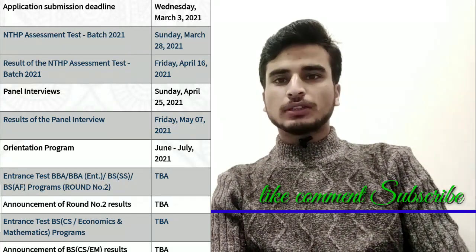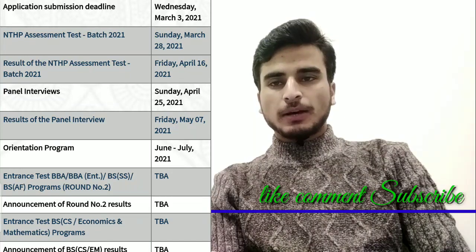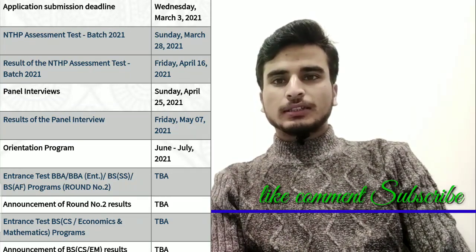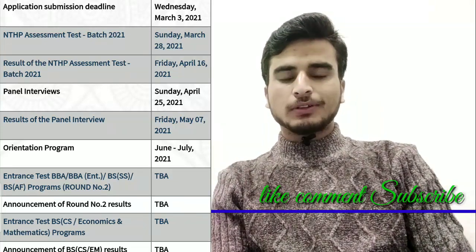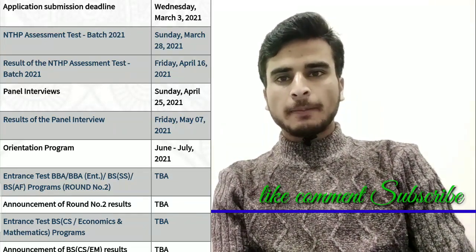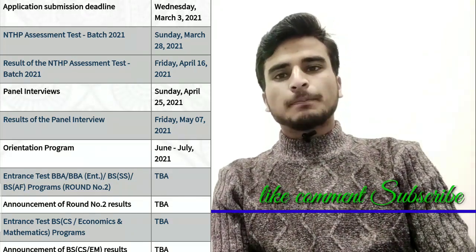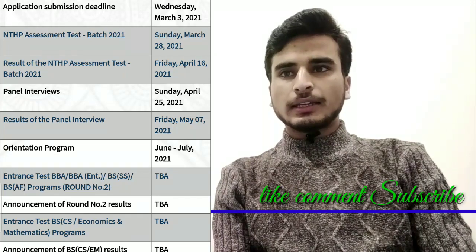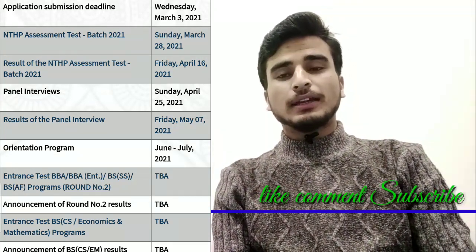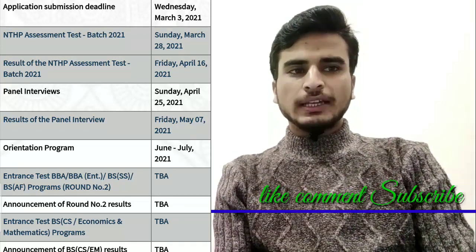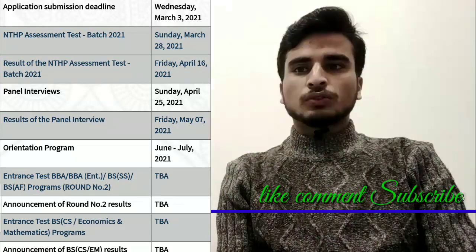Pura assessment complete ho jaata hai. Phir agar aap interview mein bhi pass hote hain aur test mein bhi pass hote hain, toh aapko do maheene ke liye on-campus IBA mein bulaaya jaata hai. June-July mein aapko orientation program hota hai. Uske baad aap SAT ya IBA Aptitude Test mein appear hote hain jo ki aapke IBA mein admission ke liye zaroori hoti hai. Yeh hai NTHP ka overall overview.